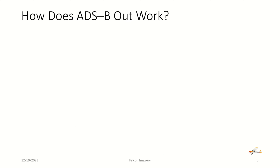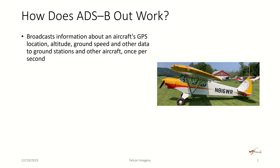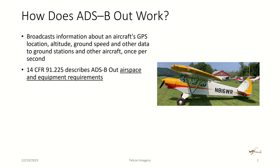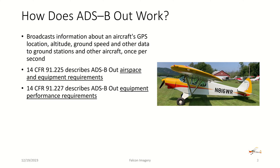ADS-B out broadcasts information about an aircraft's GPS location, altitude, ground speed, and other data to ground stations and other aircraft once per second. Per 14 CFR 91.225, it describes ADS-B out airspace and equipment requirements. And 91.227 describes ADS-B out equipment performance requirements.